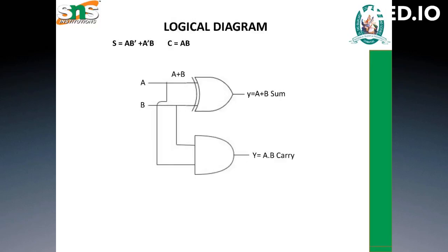The logical expression for sum is: S = A·B' + A'·B, and carry is C = A·B — this gives carry of 1 only when both inputs are 1. This is the exclusive OR gate for A XOR B giving the sum, and an AND gate where Y = A AND B giving the carry. This is the complete logical diagram for a half adder.